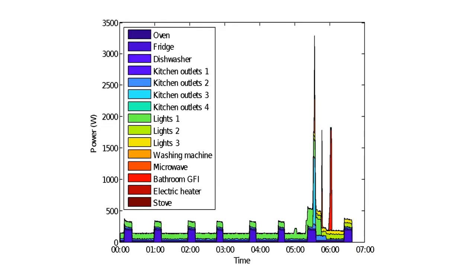So why are we here? We're here to talk about non-intrusive load monitoring or energy disaggregation — these are basically synonyms. They mean the same thing, and they refer to the problem of taking the energy consumption of a building, such as a household or a commercial property, and breaking it down into individual appliances or loads. This is the problem that most people in the room are familiar with, and what we're going to be talking about for the next two days.